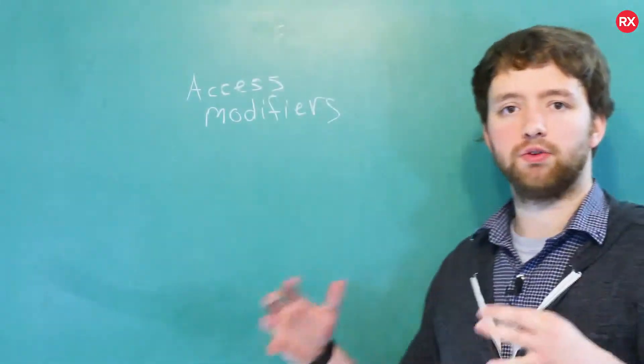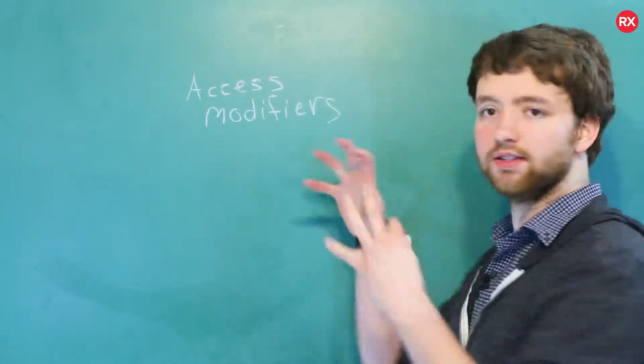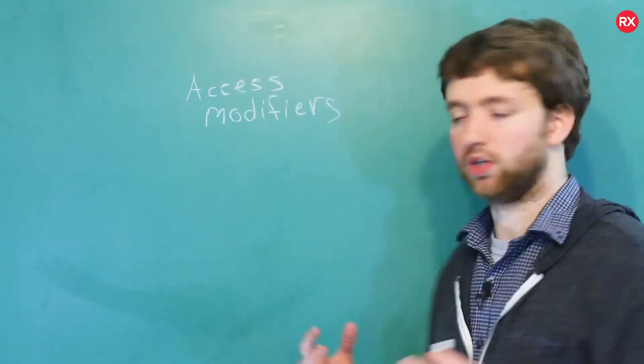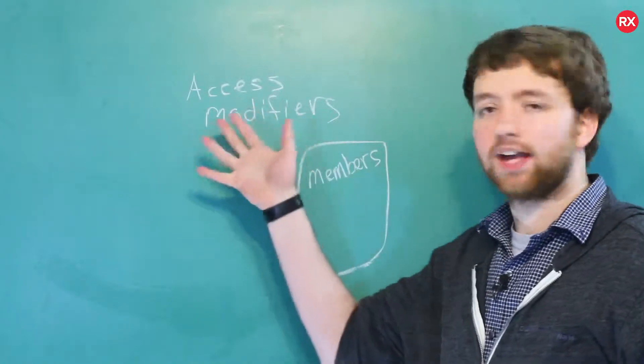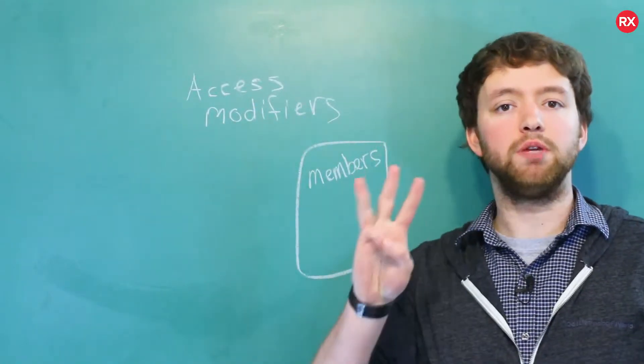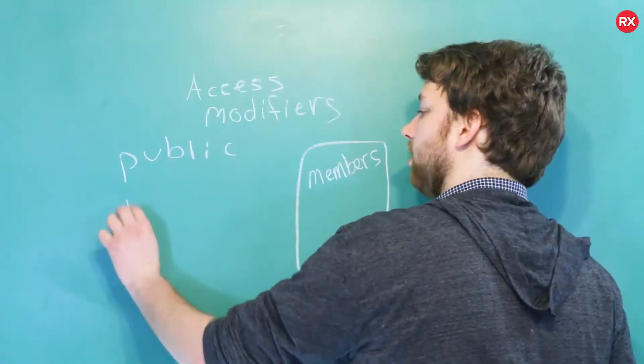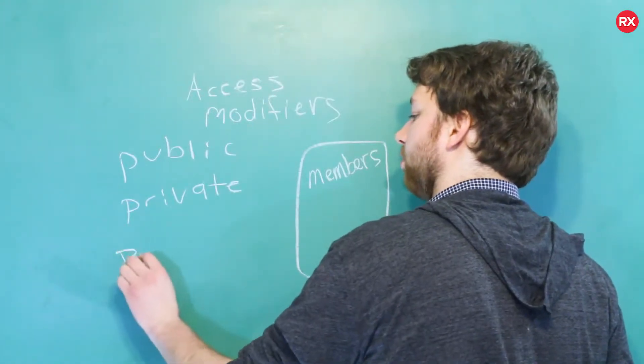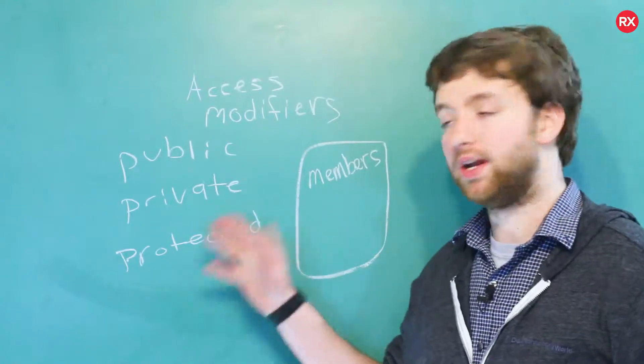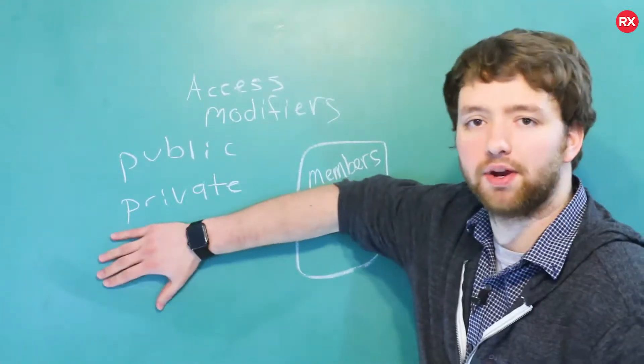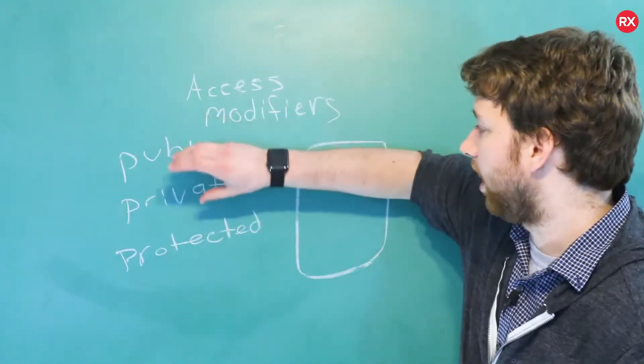When you create a class or a struct, the things inside of it are known as its members. So assume this box is a class or a struct. Well these members will have access modifiers and there's three possible options. We have public, private, and protected. Now protected is really not going to come up until we talk about inheritance. So don't even worry about that right now. Focus on public and private.